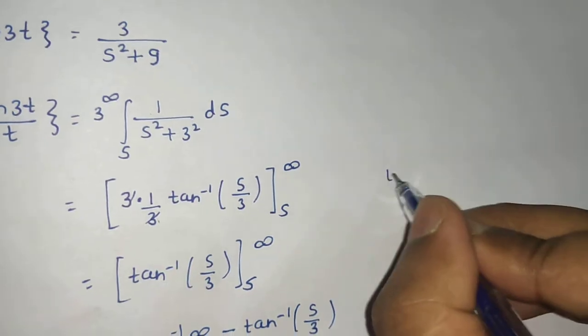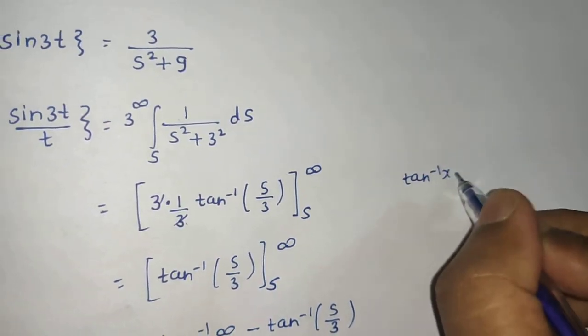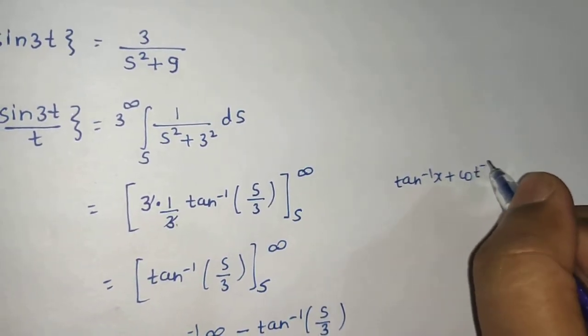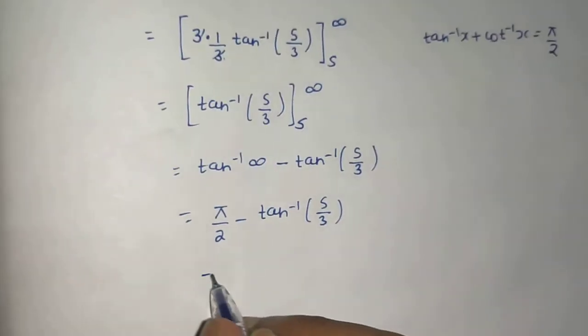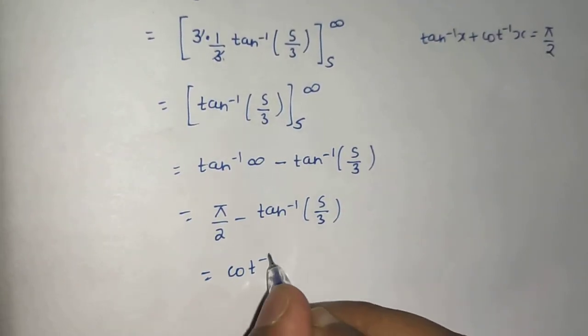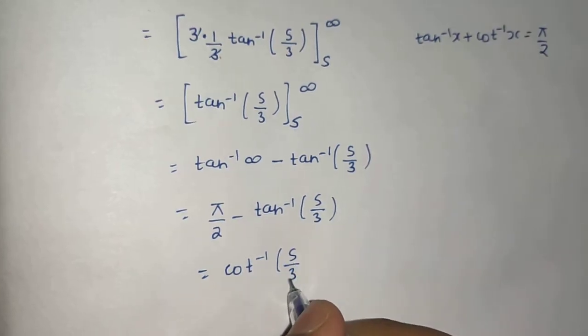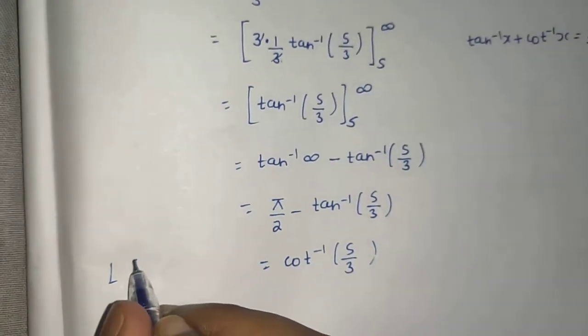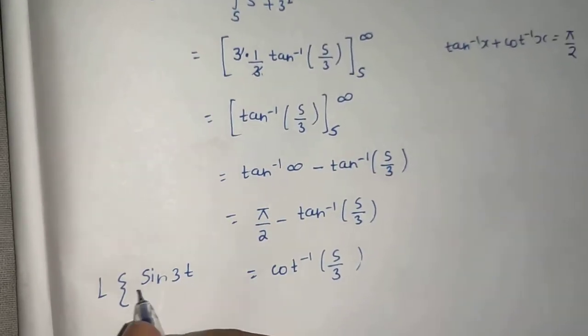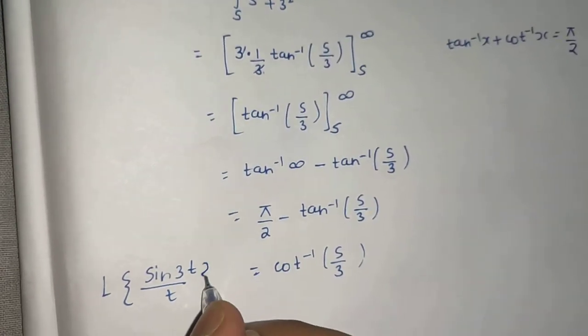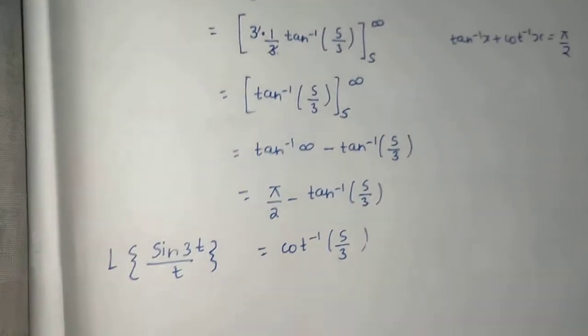And you know that tan inverse of x plus cot inverse of x is pi by 2. So we can write this as cot inverse of s by 3. So we got Laplace of sine 3t divided by t using division by t as this.